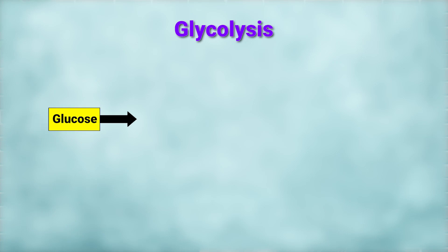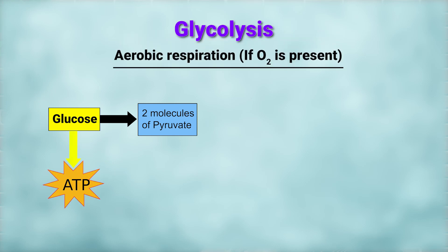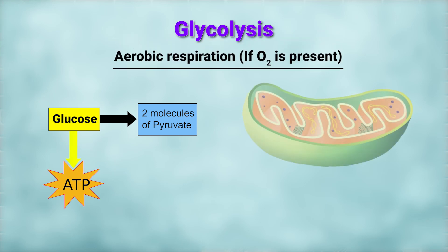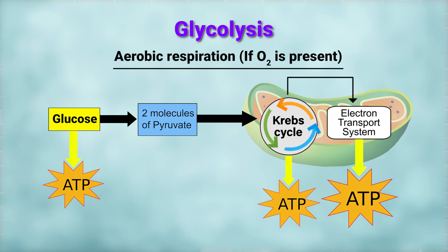The first step of respiration is glycolysis. Glucose molecules are converted into two molecules of pyruvate and two molecules of ATP are produced. If oxygen is present, in the case of aerobic respiration, pyruvate molecules go through two other stages — the Krebs cycle and electron transport chain — and a high amount of energy is released in the form of ATP.